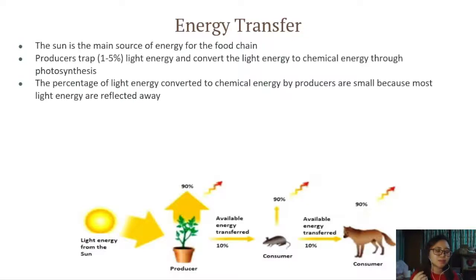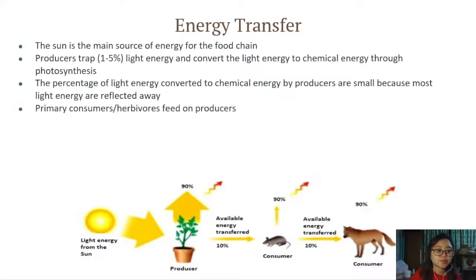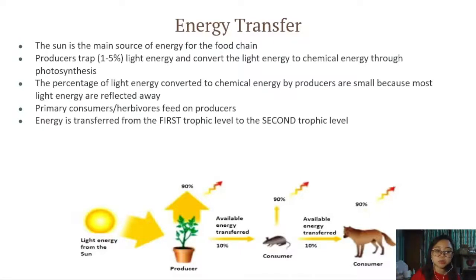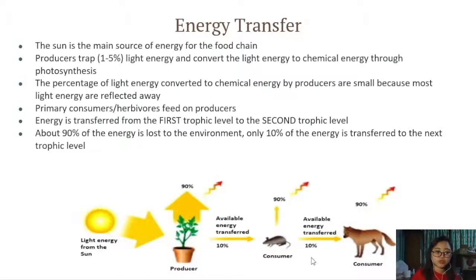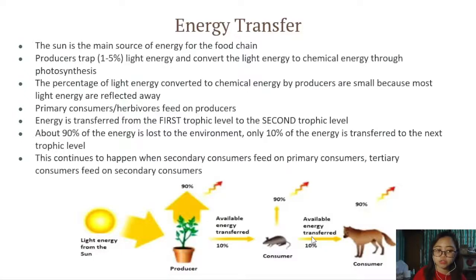Remember this — sometimes people ask why plants can't just use all of the light energy. They only use a small portion because most of that light will be reflected elsewhere. The primary consumers or herbivores feed on the producers, and energy is transferred from the first trophic level to the second trophic level. About 90% of that energy is lost to the environment, so only 10% of the energy is transferred to the next trophic level.